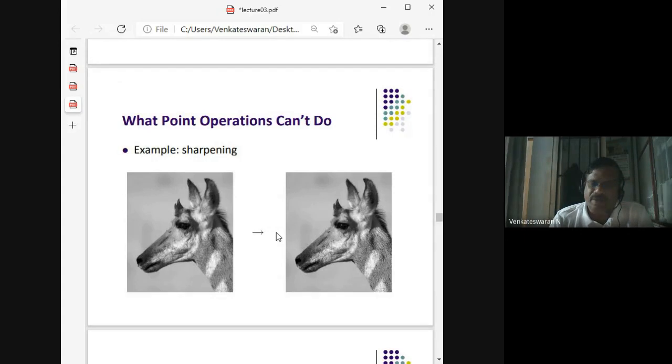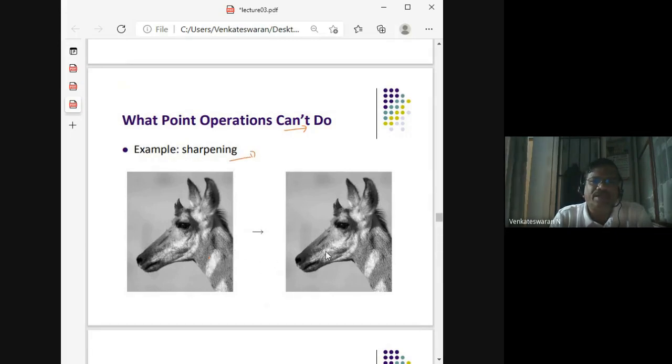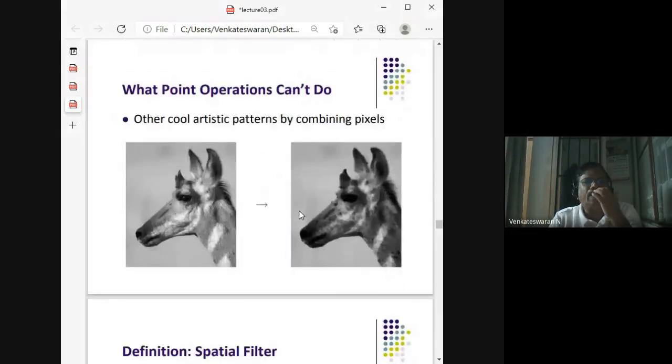Point processing cannot do some of these image enhancement techniques. One is called image sharpening. This was the original image, now it is after sharpening. We're going to operate a certain filter along with this image on this image so that you get a new image. This is sometimes called a sharpened version of the image. Some of the point operators cannot do this.